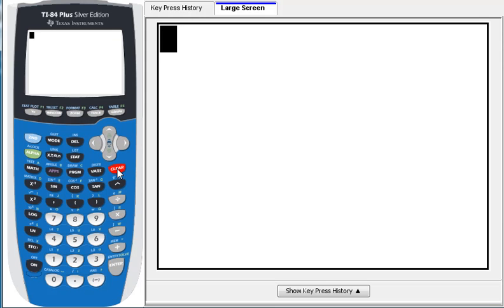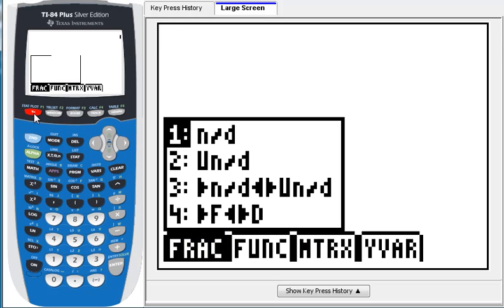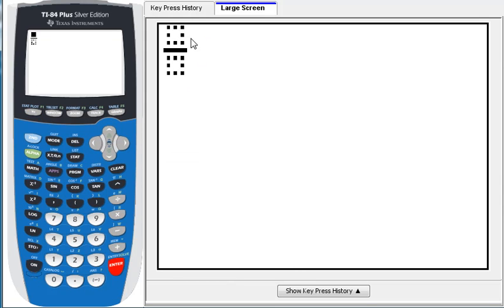Okay. The way to put in fractions is to press the alpha key followed by the y equals key. This little menu pops up here. These other menus do different things, but we're going to be concerned with the first one, frac. The first one is n slash d. That's numerator slash denominator. And it puts in a template where we can put in fractions.